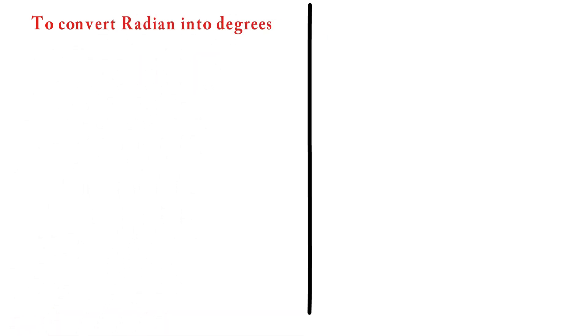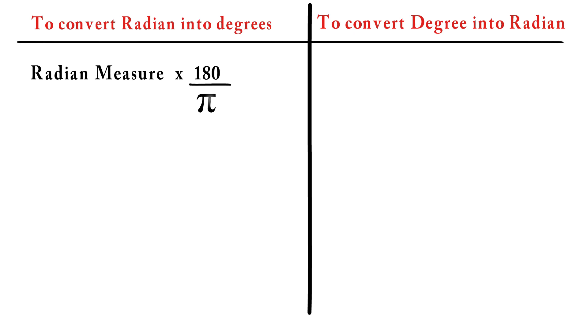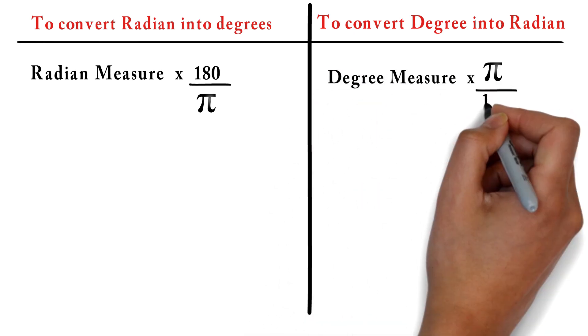To convert radian into degrees, simply multiply a radian measure by 180/π. Similarly, if you want to convert degree into radians, multiply degree measure by π/180.